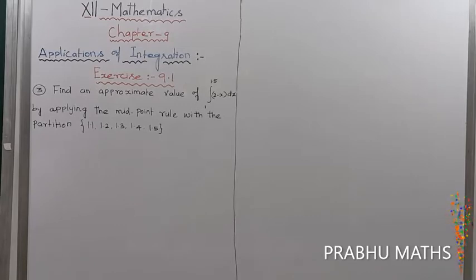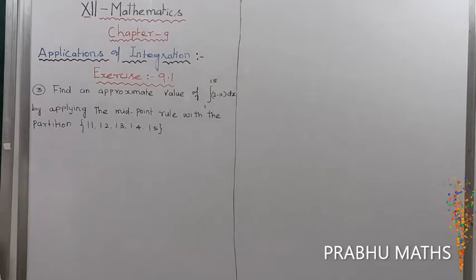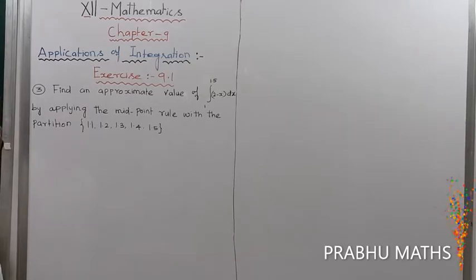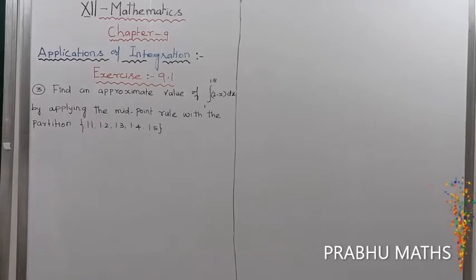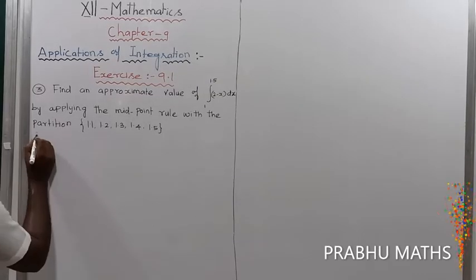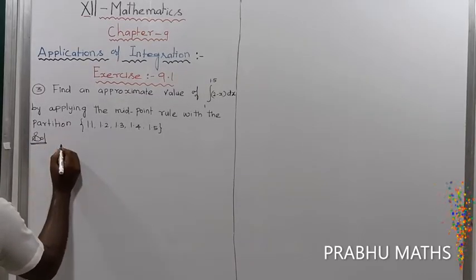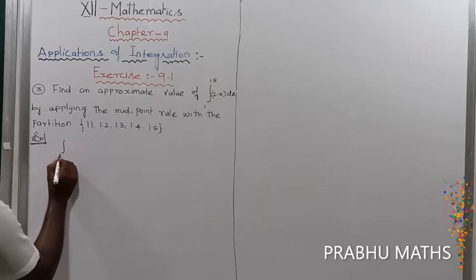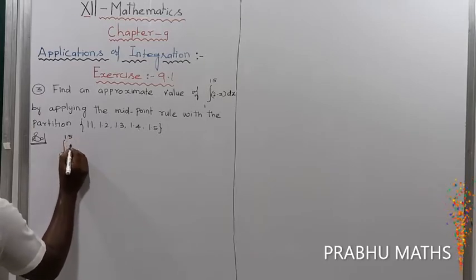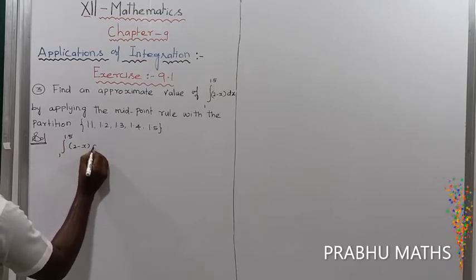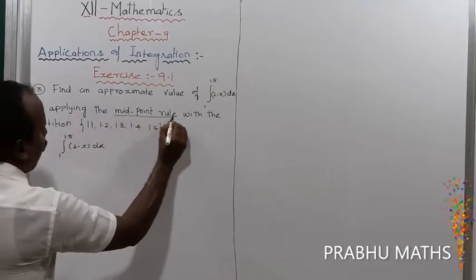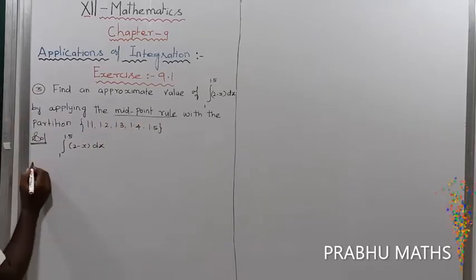Find the approximate value of the integral from 1 to 1.5 of (2 minus x) dx by applying the midpoint rule with the partition 1 to 1.5. So first, given that the integration is the integral from 1 to 1.5 of (2 minus x) dx, applying the midpoint rule.